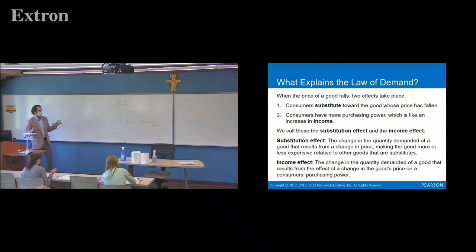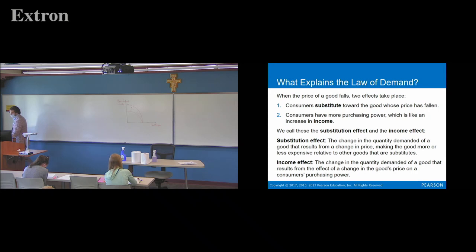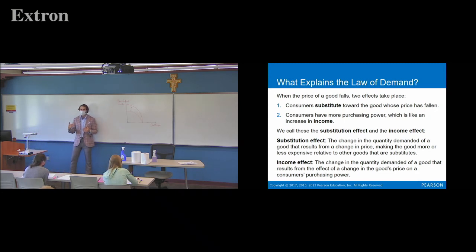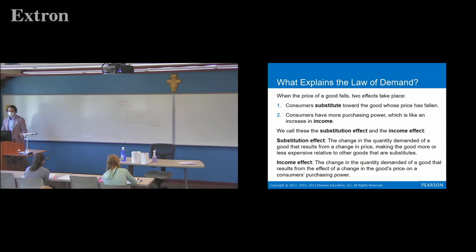So what's going on with the law of demand? There are two effects simultaneously happening when the price falls and consumers buy more. First, consumers substitute towards a product whose price has fallen — as it becomes cheaper, people are willing to buy more of that good. Second, consumers have more purchasing power because something they were going to buy is now cheaper; it's as if their income increased. These two effects — the substitution effect and the income effect — are going on at the same time.